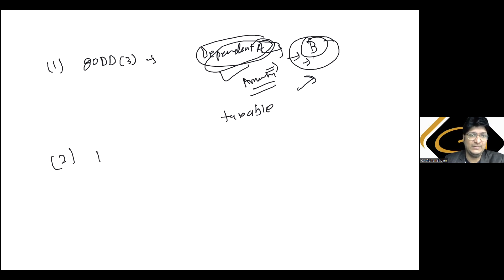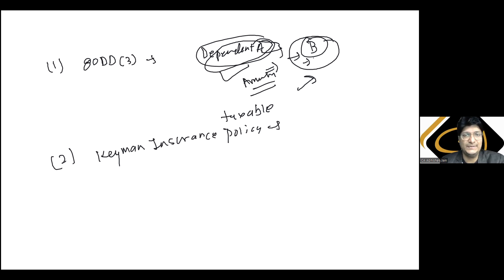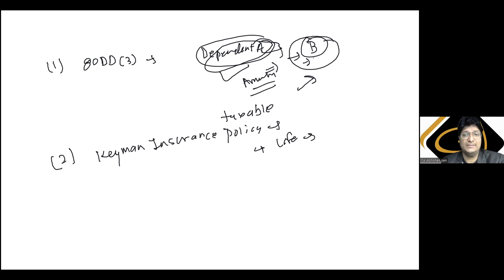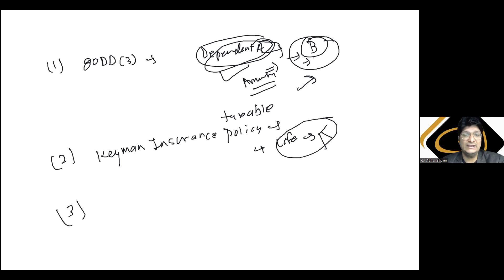B ko milne wala annuity amount taxable hoga. Isi tarah, keyman insurance policy — kisi business ke liye, kisi company ke liye, miss happening hone par jisko paisa milega, wo taxable hoga. Keyman insurance policy bhi life insurance policies ke andar cover hoti hai.